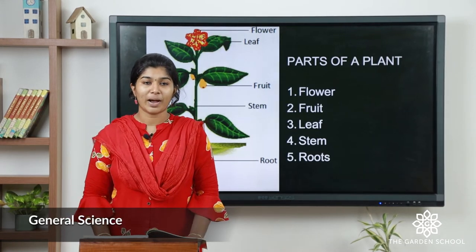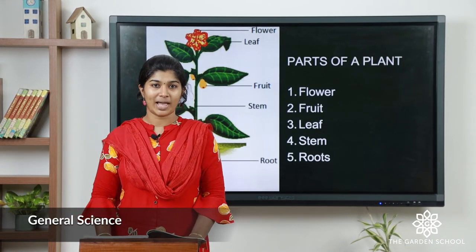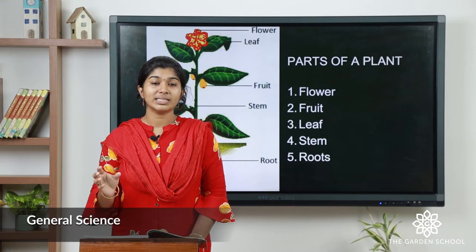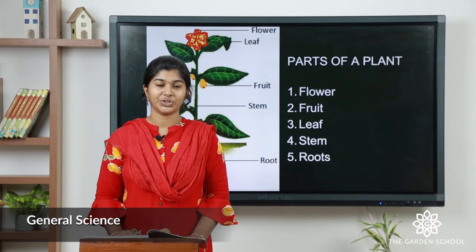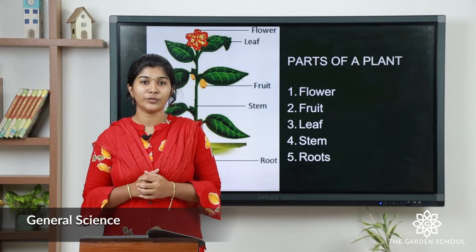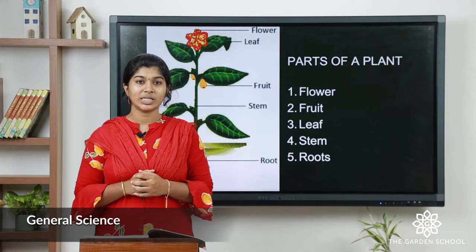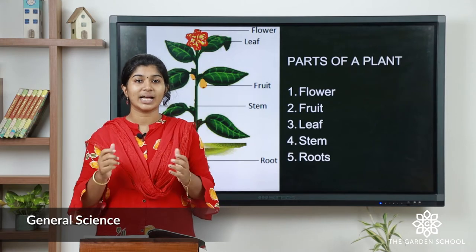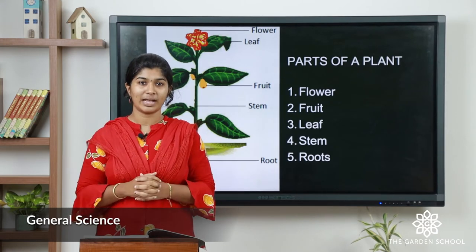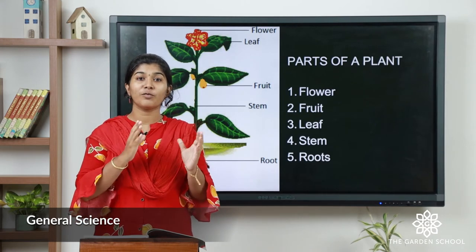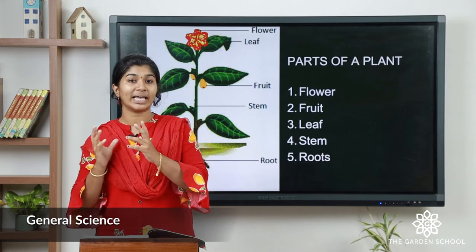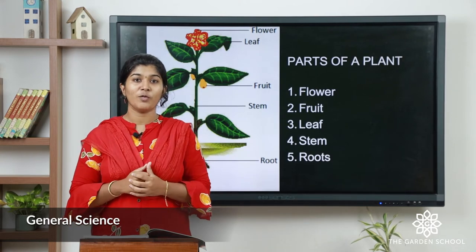Each part has its own function. The leaf prepares food for the plant, so the leaf is considered as the kitchen of a plant. The flowers form into fruit with a seed.